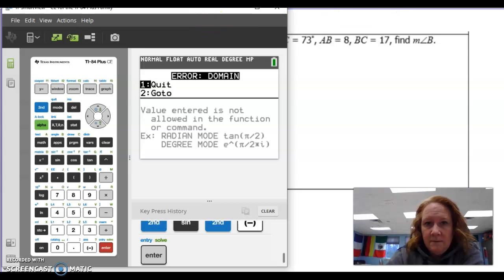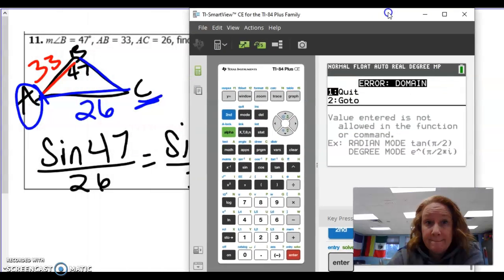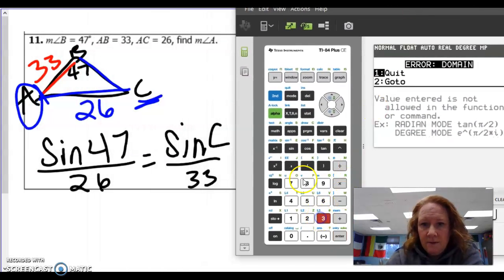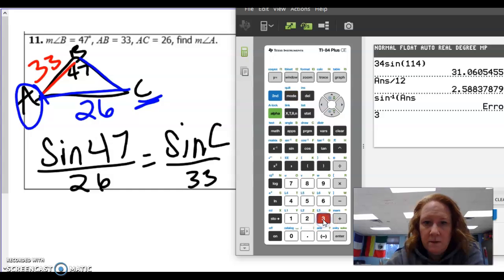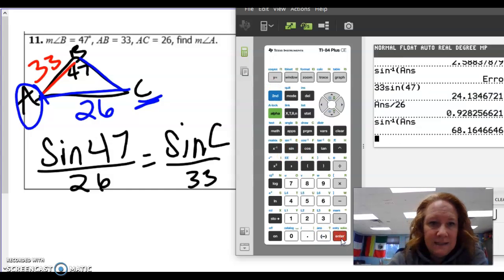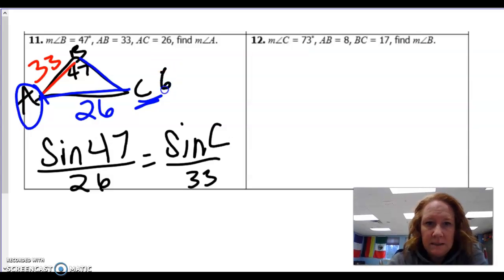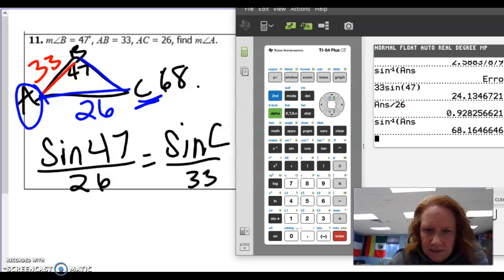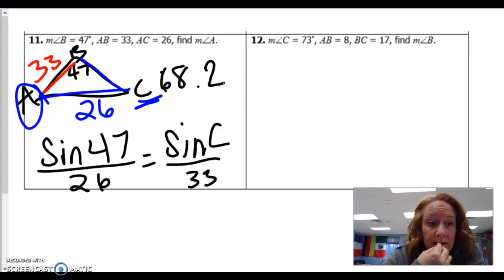So sine of 47 over 26 equals sine of whatever C is over 33. I'm just going to move this over. So 33 sine 47, divided by 26. 0.928. So that's going to work. Second sine, second answer. So C would be 68.2. Did I type all those things in right? Let me think. So that's 68.2.